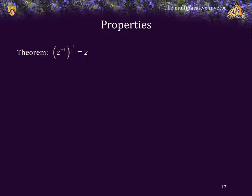Theorem: The inverse of the inverse of z is z itself. This is easy to prove, because the inverse of the inverse of z is that number such that if I multiply z inverse by that number, I get 1. But I already know that if I multiply z inverse by z, I get 1, and therefore the multiplicative inverse of z inverse must be z.